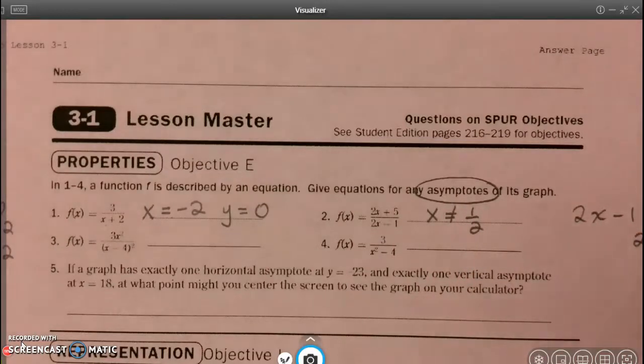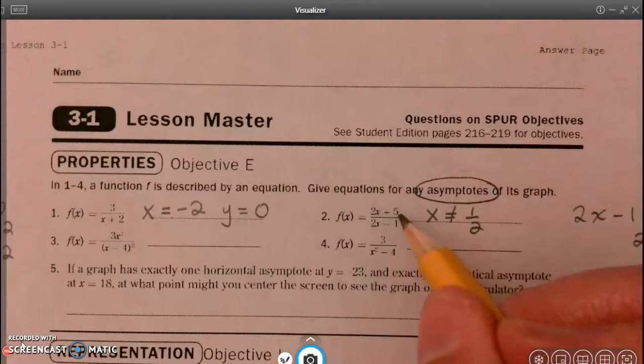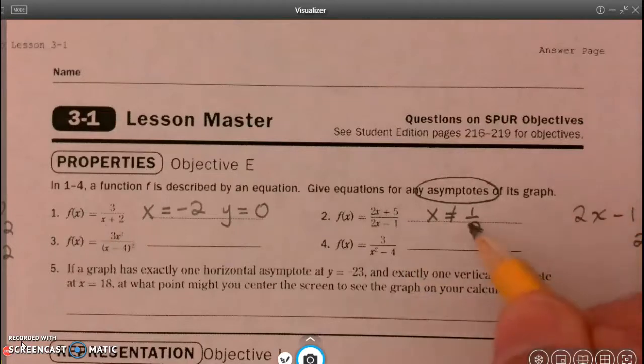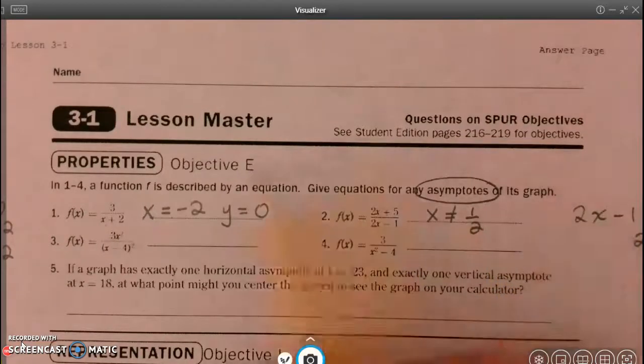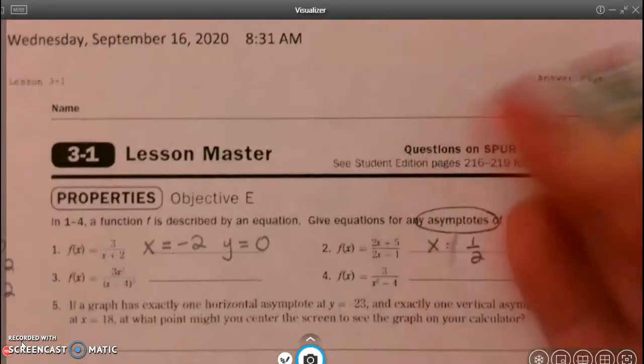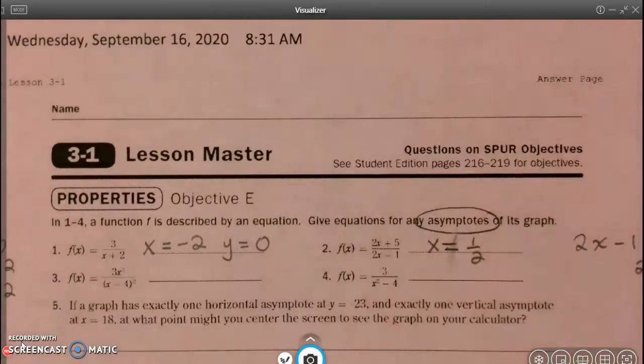Now in this one, we can't have zero in the denominator, but because there is a variable in the numerator, we could end up with zero in the numerator. So the value of the whole function could be zero, if the numerator ended up being zero. So we're not going to have an asymptote this time at y equals zero. And I did not mean to put a not equal to sign. I'm sorry if that confused things. That should be equals a half, because that's what the asymptote is.